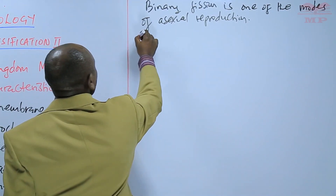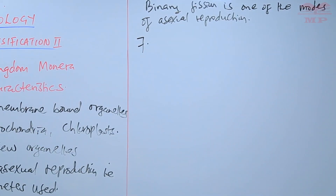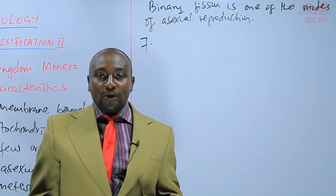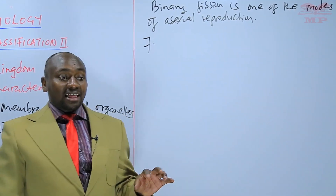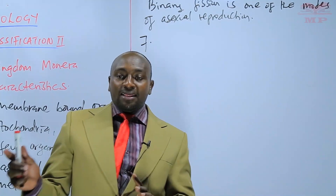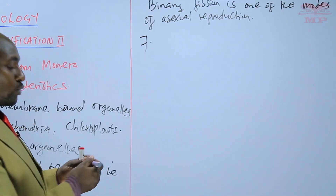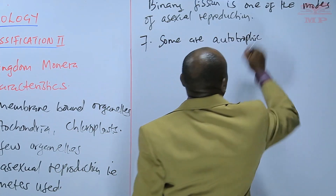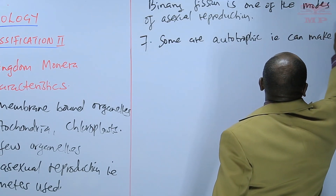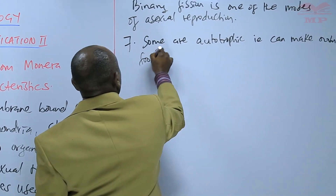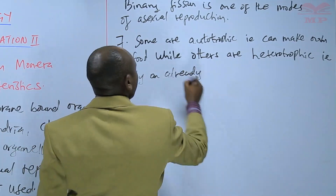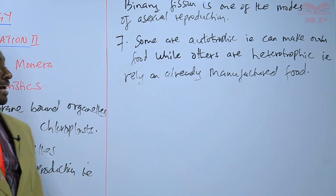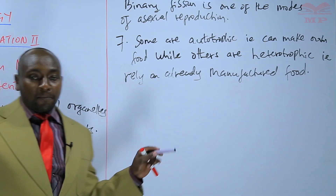The other characteristic is that some bacteria — not all of them — some bacteria are autotrophic while others are heterotrophic. That means there are some bacteria that can synthesize their own food, and others that cannot. So some are autotrophic, meaning they can make their own food, while others are heterotrophic, meaning that they rely on already manufactured food.